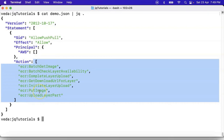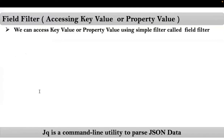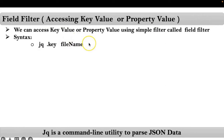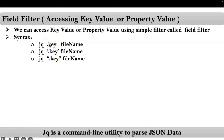Now we are ready to apply field filter. The field filter syntax is simply 'jq .key' then the file name. Optionally, we can also provide a JSON string or REST API response. This key can also be mentioned inside single or double quotes — that means the field filter can also be applied inside single or double quotes. Now let me go with practice so that we can easily understand.